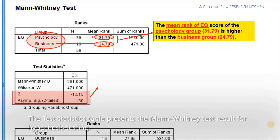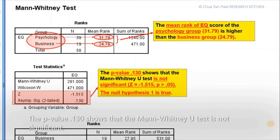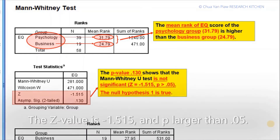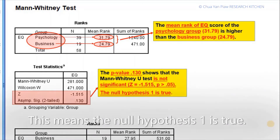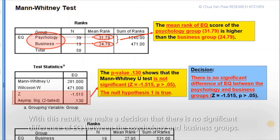The test statistics table presents the Mann-Whitney U-test results for hypothesis testing. The p-value 0.130 shows that the Mann-Whitney U-test is not significant. The z-value is negative 1.515 and p is larger than 0.05. This means the null hypothesis one is true. We make a decision that there is no significant difference in EQ between the psychology and business groups.